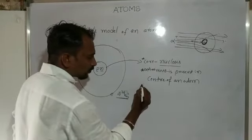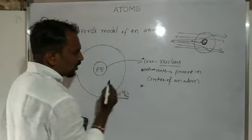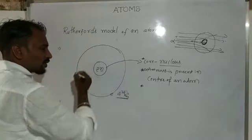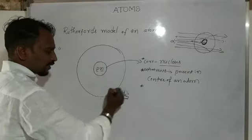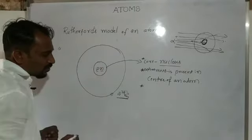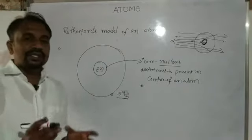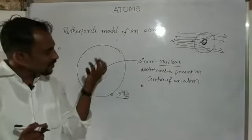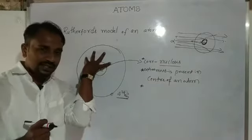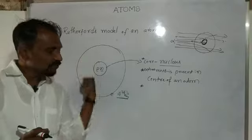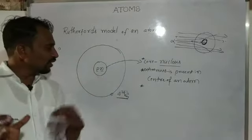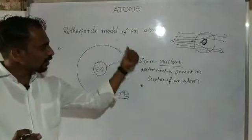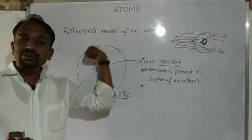The third point: electrons are revolving around the nucleus. This is similar to planetary motion — just as planets revolve around the sun, all electrons revolve around the nucleus.